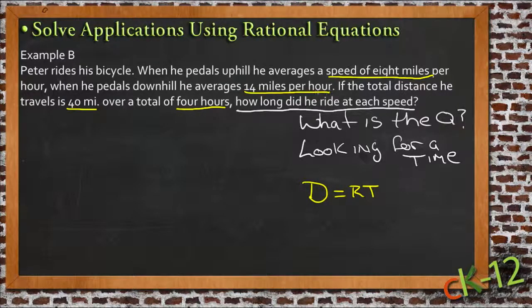We know that the total that he travels is all written in this statement. One part of the time he's traveling one speed, and the other part he's traveling the other speed. There aren't any other speeds or parts of the trip. This means the total 4 hours is the time he travels uphill plus the time he travels downhill.